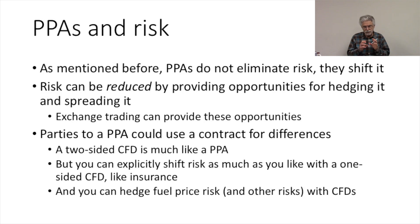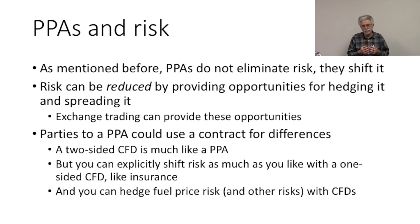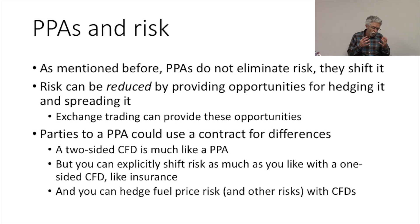What's different about a contract for difference that's important in the context of thinking about getting good price signals from the market is that contracts for difference can be traded. The trading of contracts for difference allows for the reallocation of risk, but it also offers us valuable information about the price of hedging that risk — the price of insuring that risk. So we have the possibility of two-sided contracts for differences, which are like power purchase agreements, and a one-sided contract for difference being more like an insurance contract.